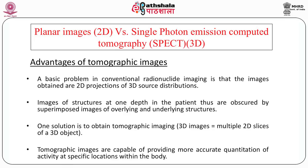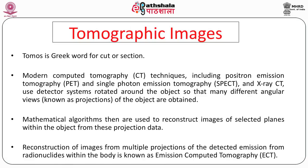Tomographic images are capable of providing more accurate quantitation of activity at specific locations within the body. That is why SPECT is more popular than a gamma camera without SPECT. The word 'tomo' in Greek means cut or section. Modern computed tomography techniques — including positron emission tomography, single photon emission computed tomography, and X-ray CT — use detector systems rotated around the object so that many different angular views can be taken, and finally by using reconstruction techniques, the image can be obtained in three-dimensional form.